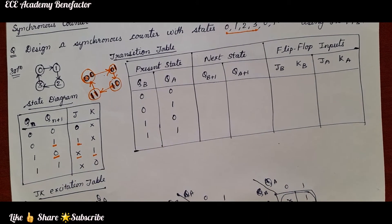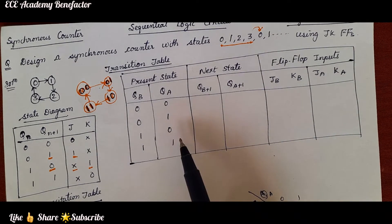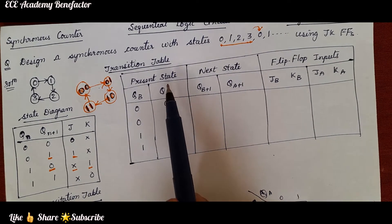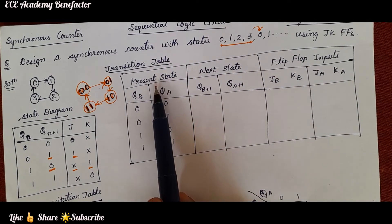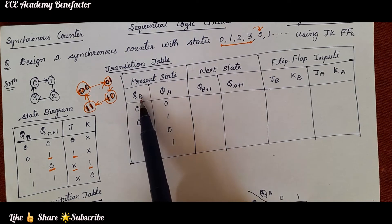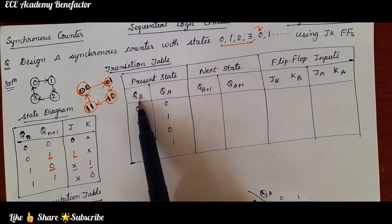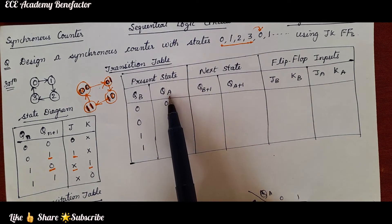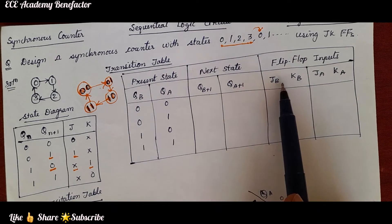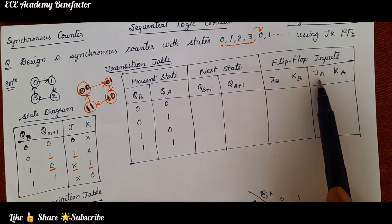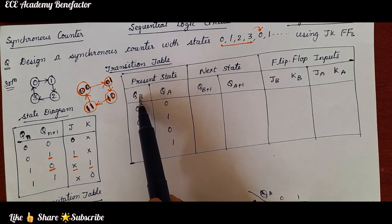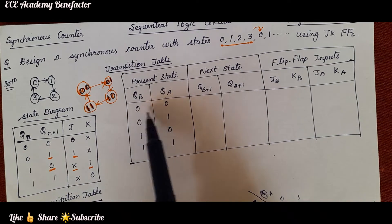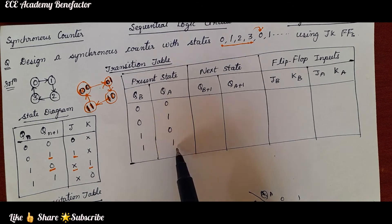Now let us see how to draw the transition table. The transition table has 3 columns: present state, next state, and flip-flop inputs. We require 2 flip-flops, so we are taking the present state as QB, QA — the output of the 2 flip-flops. The next state will be QB+1 and QA+1. The flip-flop inputs are JB, KB, JA, KA. For the present state QB QA, two variables give four possible combinations: 00, 01, 10, 11.